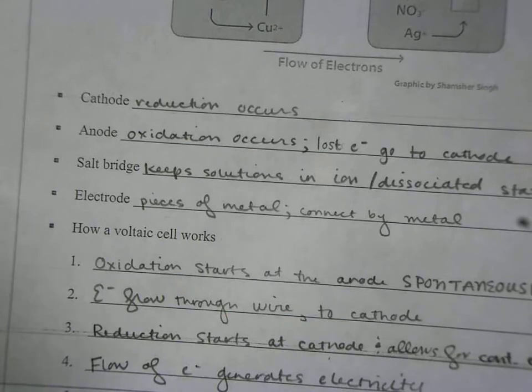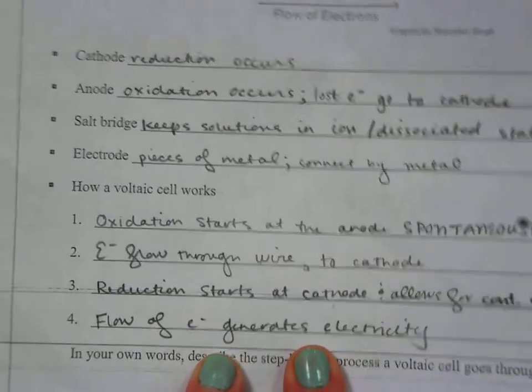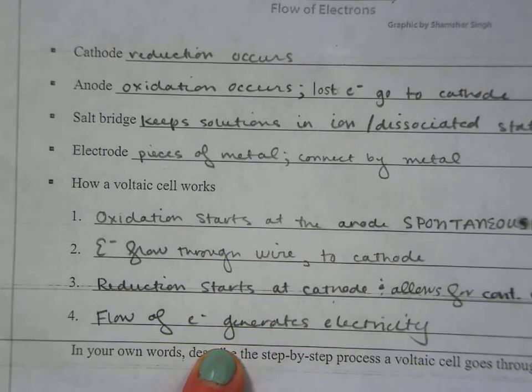And then the final step is that those electrons, or the final idea I guess, is that those electrons will generate electricity for us. So this is a voltaic cell.